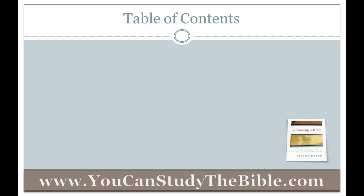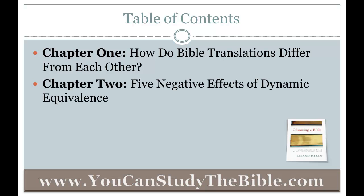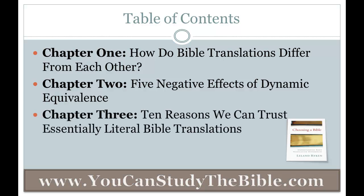This is a very small book, totaling only 32 pages including a one-page appendix. Chapter 1 is titled How Do Bible Translations Differ from Each Other?, with subsections on the goal of Bible translation and thought-for-thought versus word-for-word. Chapter 2 covers five negative effects of dynamic equivalence, and chapter 3 presents ten reasons we can trust essentially literal Bible translations. There is also an appendix with a Bible translation chart and notes.